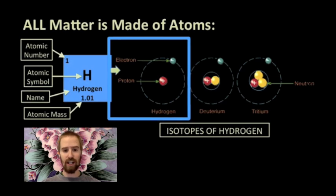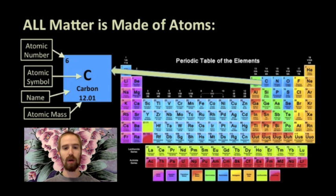Carbon is the single most important element for living things. Carbon has an atomic number of six, meaning it always contains six protons in the nucleus. It also has an atomic mass of 12.01 AMUs, which is the average mass of a carbon atom based on how many protons and neutrons it contains.